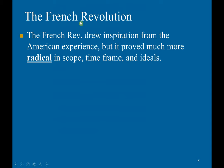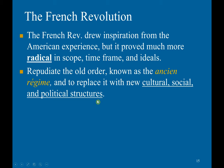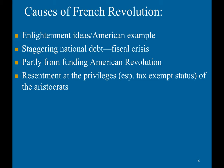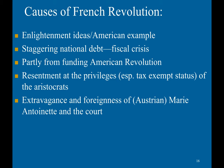The French Revolution drew inspiration from the American experience, but proved much more radical in scope, time frame, and ideals. It repudiated the old order known as the ancien régime and sought to replace it with a new cultural, social, and political order. The French Revolution was caused by Enlightenment ideals, the inspiration of the American Revolution, a staggering national debt and fiscal crisis partly from funding the American Revolution, resentment at the privileges — especially tax and status — of the aristocrats, the extravagance of Austrian Marie Antoinette and the court, and bad harvests.